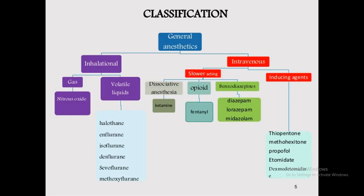Classification of drugs: inhalation gases and volatile liquids include nitrous oxide, halothane, isoflurane, desflurane, and sevoflurane. Dissociative anesthesia includes ketamine. Opiates include fentanyl. Benzodiazepines include diazepam, lorazepam, and midazolam. Inducing agents include thiopentone and propofol. These are the drugs used as general anesthetic agents.